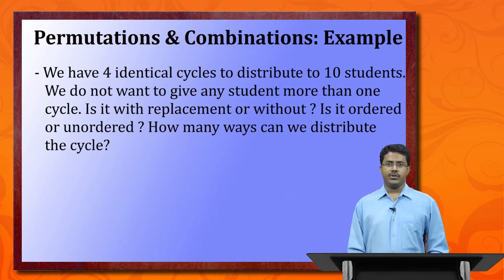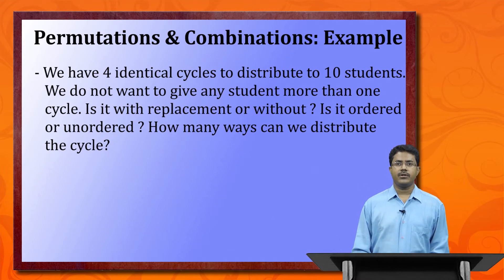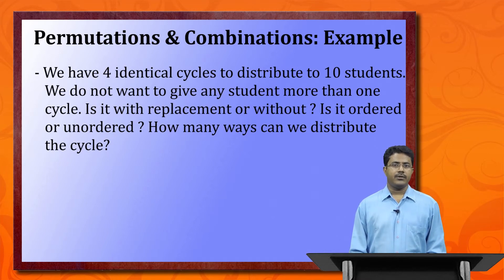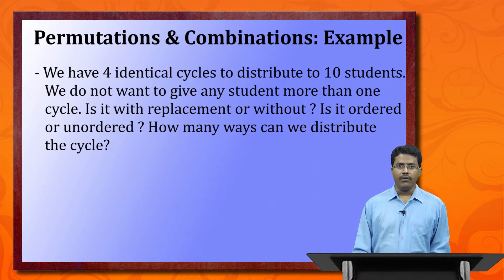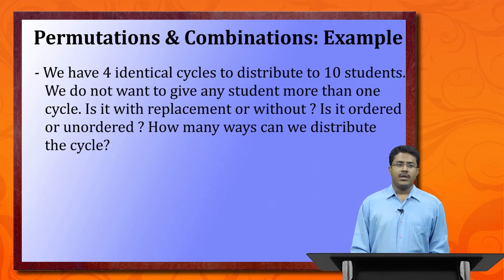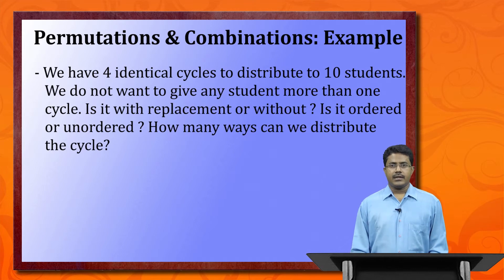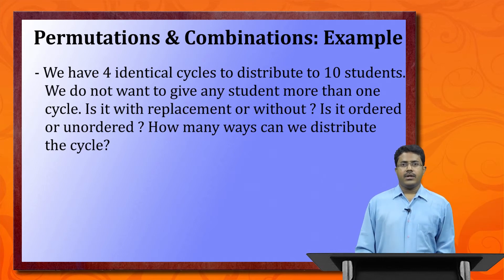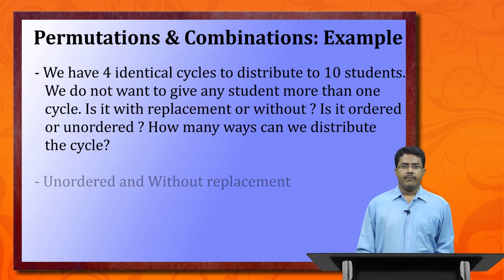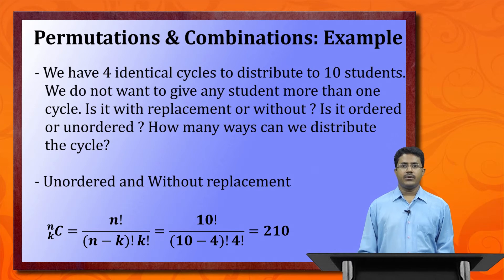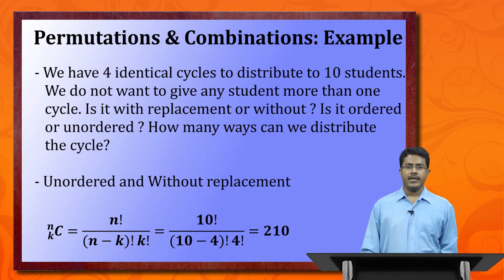Example: distributing 4 identical cycles to 10 students, with no student getting more than one. Since cycles are identical, order does not matter — unordered. Since no student gets more than one, it is without replacement. We use nCk, which gives 210 ways to distribute the cycles.